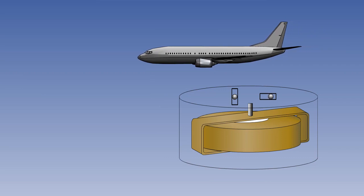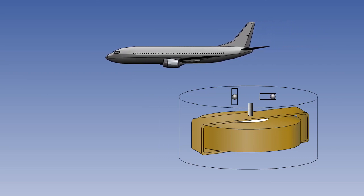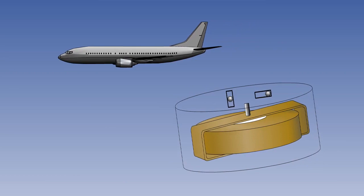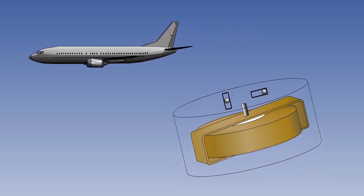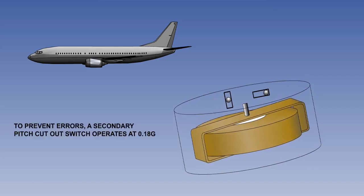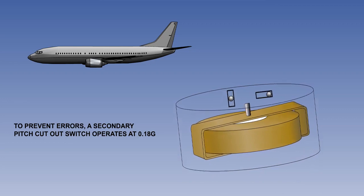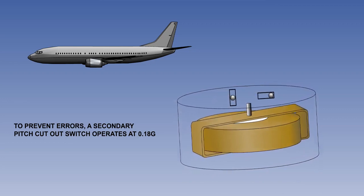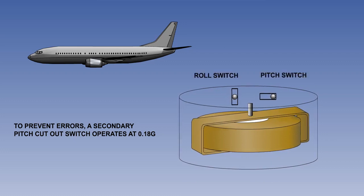Acceleration errors are minimal in the electric artificial horizon. However, there would still be a tendency under acceleration for the mercury in the mercury switch to close its electrical circuit as a result of inertia acting on the mercury. This would result in the pitch torque motor falsely precessing the gyro assembly out of vertical. To overcome this, a secondary pitch cutout switch is incorporated in the circuit which activates when an acceleration of 0.18 G or greater is experienced.